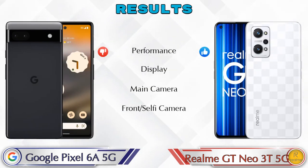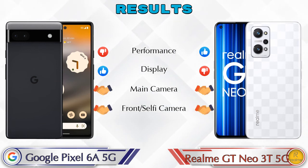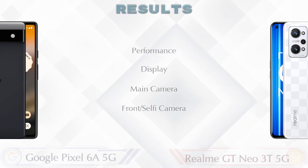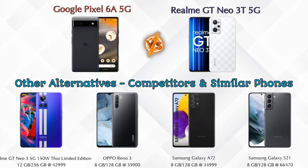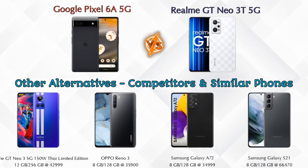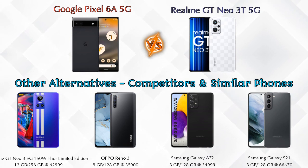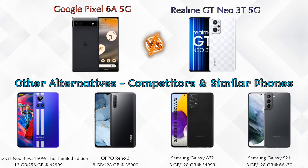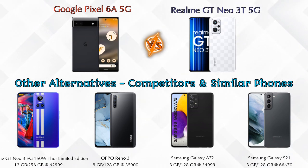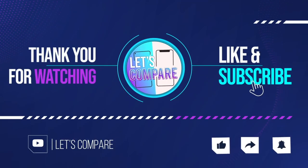Talking about the result: in performance, GT Neo 3T 5G is ahead; in display, Pixel 6a 5G is ahead; in main camera and front selfie camera, both phones are the same. Other competitors at the same price include Realme GT Neo 3 5G 150W Thor Limited Edition, Oppo Reno 3, Samsung Galaxy A72, and Samsung Galaxy S21 5G. Details about all competitor phones are in the description. If you like our video, please like and subscribe — thanks for watching.